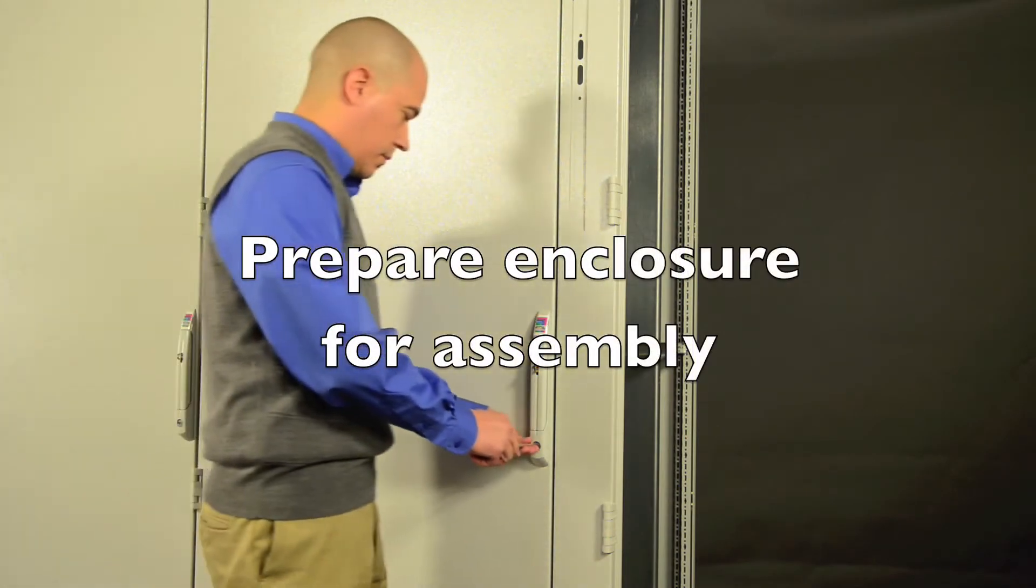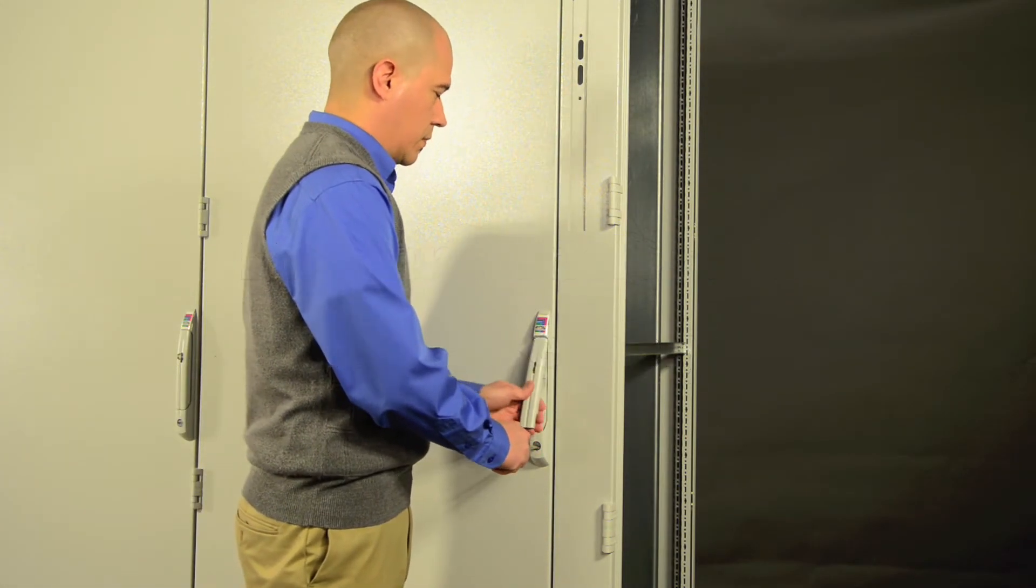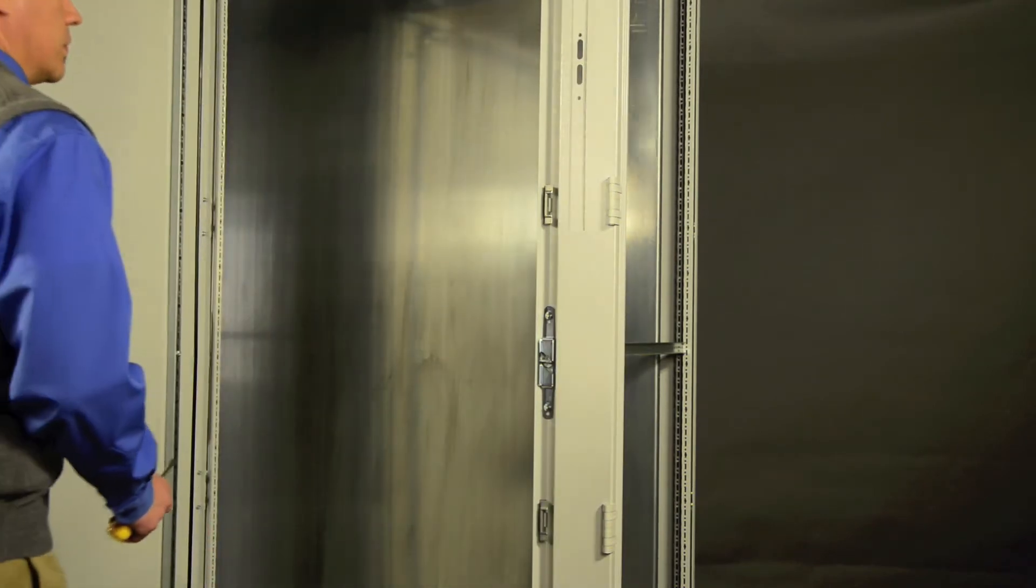Using a slotted screwdriver, open the main door. Then open the flange door by disengaging the top and bottom latches.